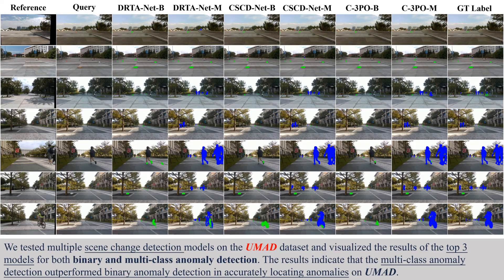We tested multiple scene change detection models on the UMAD dataset and visualized the results of the top three models for both binary and multi-class anomaly detection. The results indicate that multi-class anomaly detection outperformed binary anomaly detection in accurately locating anomalies on UMAD.